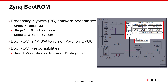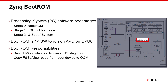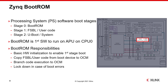The main tasks of the boot ROM are to perform basic hardware initialization required to enable first stage boot, copy the first stage boot loader (FSBL) or user code from the boot device to the on-chip memory (OCM), and then branch code execution to the OCM. If the boot ROM detects an error while executing, it locks down the system and generates an error code.